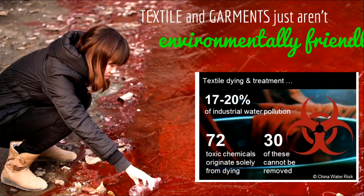Another issue is that clothing is not produced locally anymore, especially in Europe and the US, as production has moved to developing countries like Vietnam, Bangladesh, China, Indonesia, and the Philippines. This also means people get less and less access to clothes production. Maybe in the future nobody will know how to make clothes anymore — you just go to the shop and buy them.